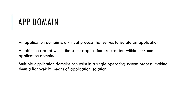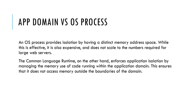What exactly is an AppDomain? An application domain is a virtual process that serves to isolate an application. All objects created within the same application are created within the same application domain. Multiple application domains can exist in a single operating system process, making them a lightweight means of application isolation. What is the difference between an AppDomain and a web process? A web process provides isolation by having a distinct memory address space, which is effective but also expensive and does not scale to the numbers required for large web servers. For AppDomain, the CLR enforces application isolation by managing the memory use of code running within the application domain.